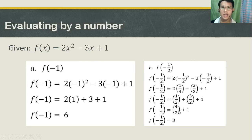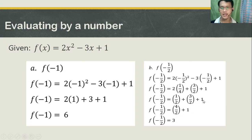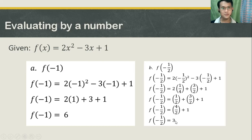Since we are only operating fractions with the same denominator in this given, plus 1. Then 4 over 2, simplify that — that is simply equal to 2 plus 1. So 2 plus 1, we get 3. Therefore, our f of negative 1 half is equal to 3.